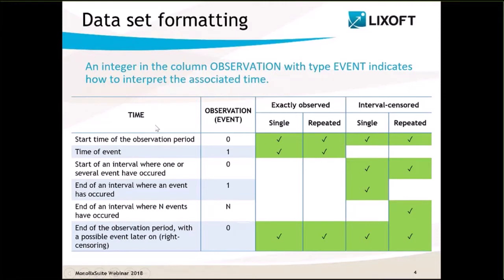Moreover, the column time should contain not only the time of an event, but also other relevant times. In particular, contrary to other survival analysis software, Monolix requires specifying the time at which the observation period starts for each individual, associated with a zero in the observation column. This allows defining the dataset using absolute time in addition to duration.